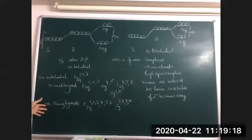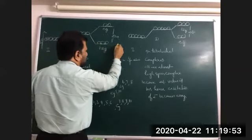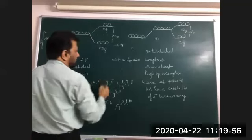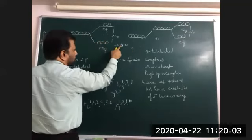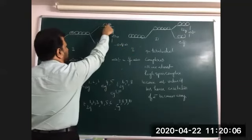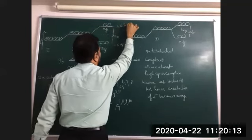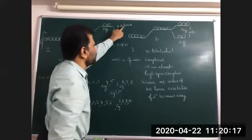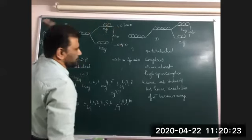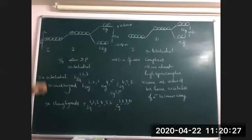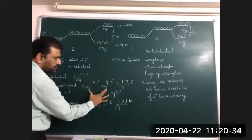Now, if an electron enters t2g it is multiplied by minus 0.4 delta. If there are six electrons: 6 × (−0.4) = −2.4. If electrons enter eg, multiply by +0.6 delta. With four electrons in eg: 4 × 0.6 = +2.4 delta. Six electrons in t2g: 6 × (−0.4) = −2.4. Plus 2.4 and minus 2.4 get cancelled — that means Crystal Field Stabilization Energy is zero there.